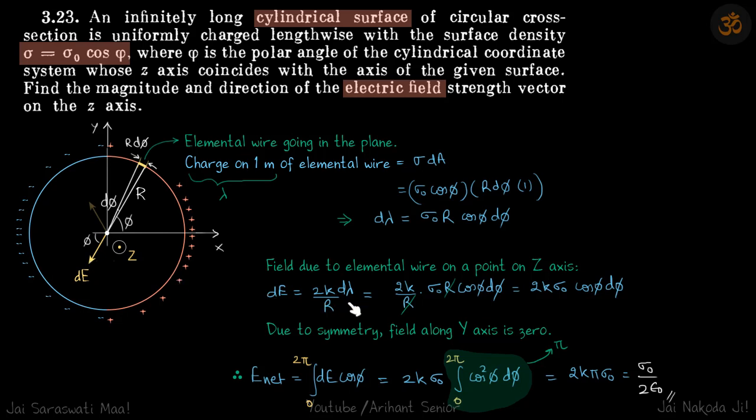We know the formula that is 2k lambda by R. We put the value of d lambda here. This becomes 2k sigma naught cos phi d phi.